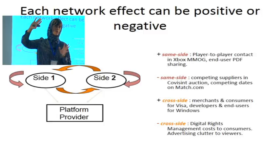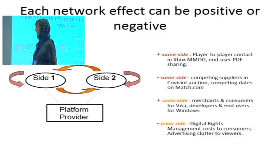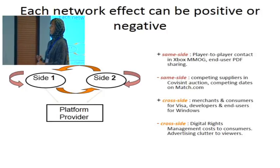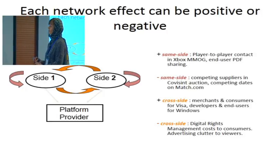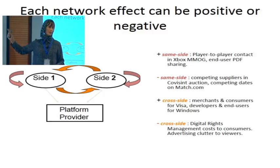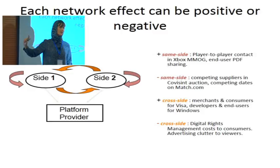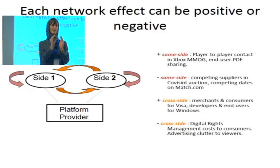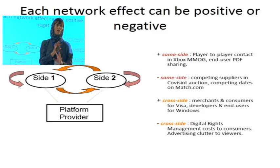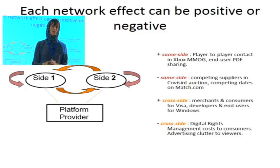Network effects can work either way — positive or negative. I have to be careful about the specific platform situation. For example, in social networks monetized by advertising, users tend not to like advertisements. The more advertisers there are, the less you enjoy the service — that's a negative cross-side effect if advertisers and users are the two sides. The key insight is to think through carefully where network effects come from and whether they're positive or negative.